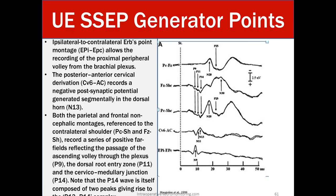Upper extremity generator points: an ipsilateral-to-contralateral ERBs point montage (EPI to EPC) records the proximal peripheral volley of the brachial plexus. The CV6-to-AC derivation records a negative postsynaptic potential in the dorsal horn. Parietal and frontal noncephalic montages referenced to the contralateral shoulder (PC to SH and FZ to SH) record far-field positive potentials reflecting the ascending volley through the plexus (P9), dorsal root entry zone (P11), and cervical medullary junction (P14). Far fields are typically P waves. The P14 is composed of two peaks giving rise to the P13 and P14 complex.